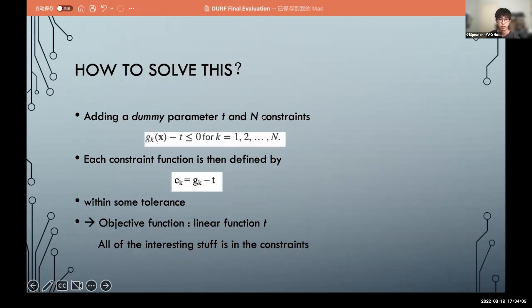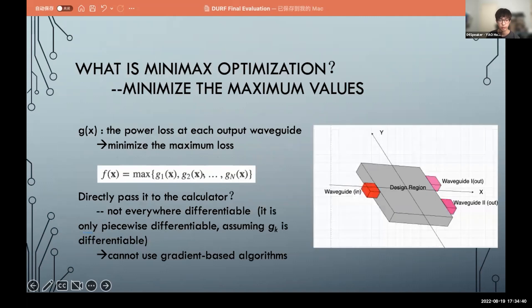So what we would do is to add in a dummy parameter and then constrain these parameters. The g_k minus t should be less than zero, and the constraint is here. And it means that the parameter and the power loss should not be very close because the program would be stuck there. So our objective is just to minimize the linear function t instead of this f(x).